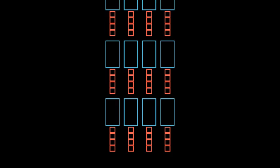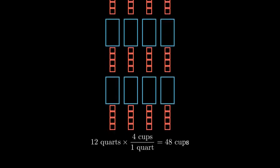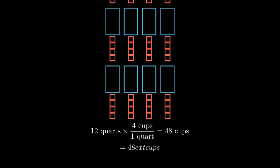Now let's solve this step by step. When we multiply 12 quarts by four cups per quart, we get 48 cups total.